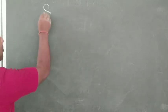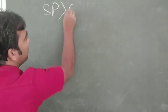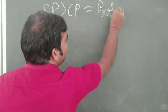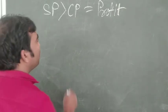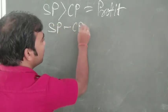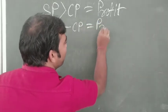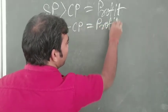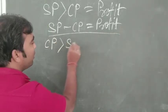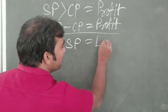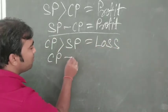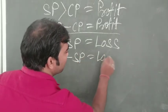First, when SP is greater than CP, it will be profit. To find out profit, we do SP minus CP and we get the profit amount. When CP is greater than SP, it will be loss. To find out loss, CP minus SP gives us the loss amount.